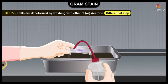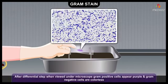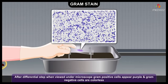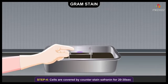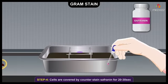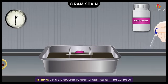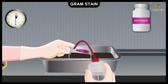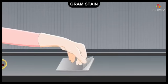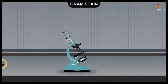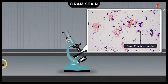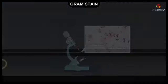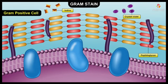Excess ethanol is then washed off with water. When viewed under the microscope, Gram positive cells appear purple and Gram negative cells are colorless. Finally, the rinsed cells are covered with the counterstain safranin for 20 to 30 seconds, which stains the Gram negative bacteria pink. After rinsing with water, the slide is dried with filter paper. When viewed microscopically, Gram positive bacteria are purple and Gram negative bacteria are pink.